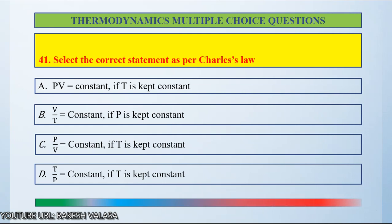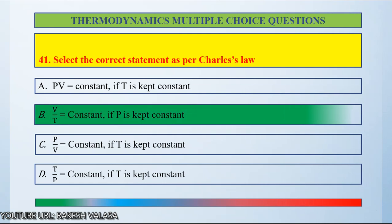The answer is V by T equal constant if P is kept constant. That means volume is directly proportional to temperature when pressure is kept constant.